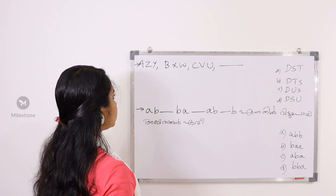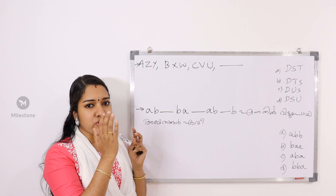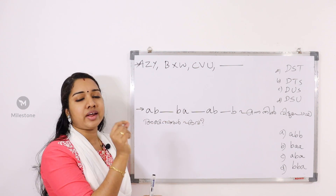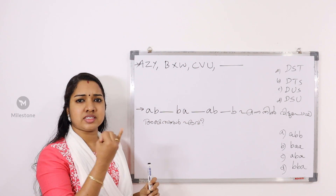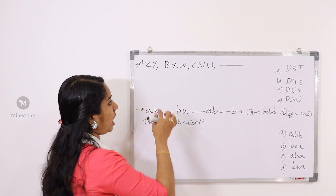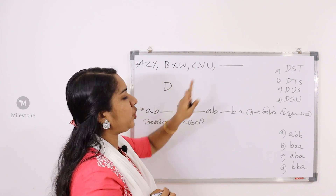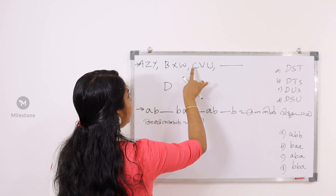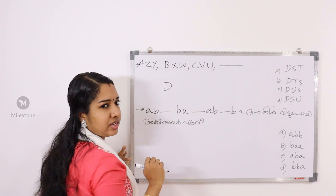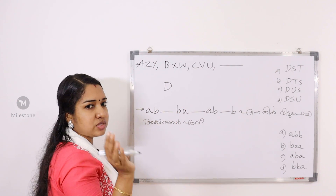Let's see the numbers: A, Z, Y — B, X, W — C, V, U. We use three numbers: 1, 2, 3, and 4. The pattern is easy, but especially complicated. ZYXWVU — UVWXYZ — it's the same order.